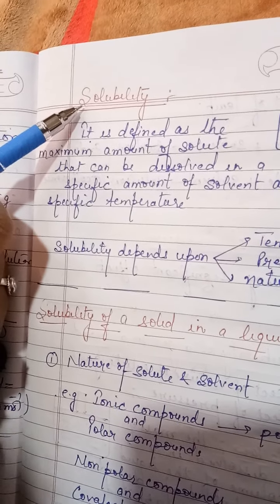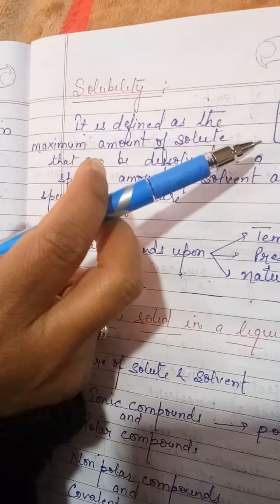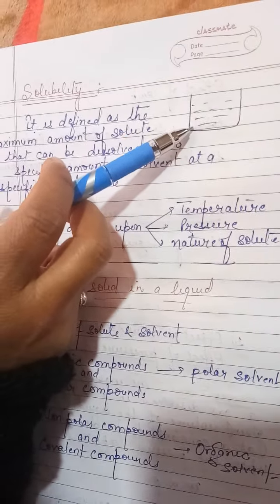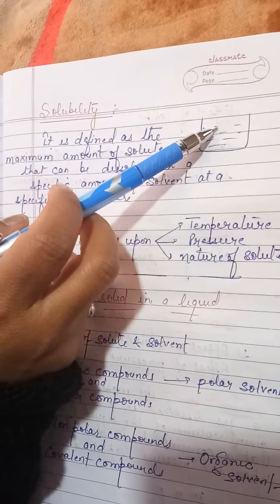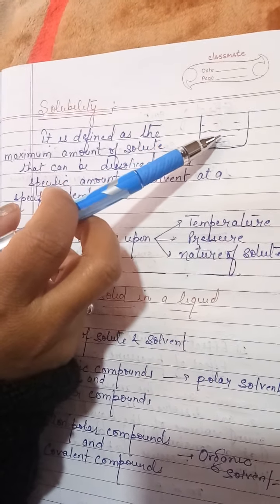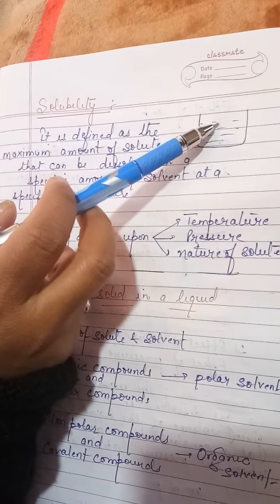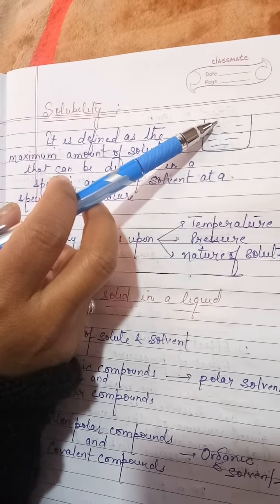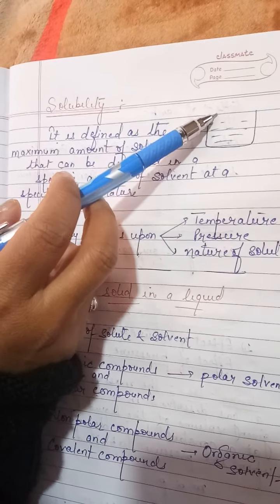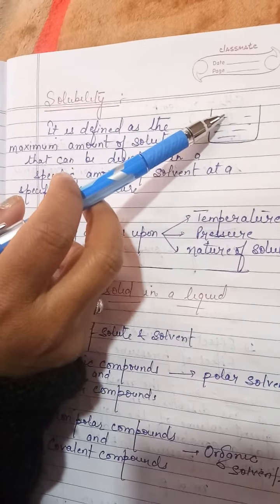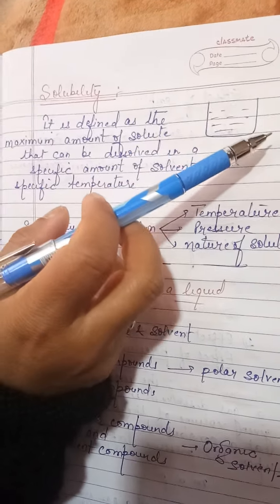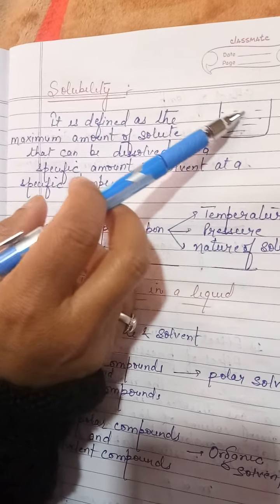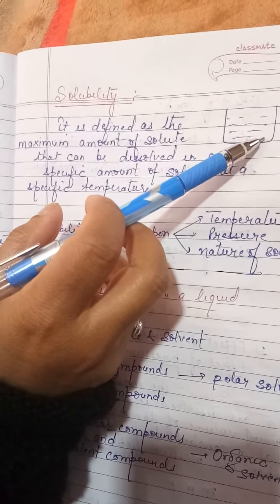Solubility — let's look at a simple example. I am taking 10g of water. I am going to dissolve 2g of sugar in the water, then 10g of sugar in the water. After dissolving 10g of sugar, the sugar is dissolved in the water.